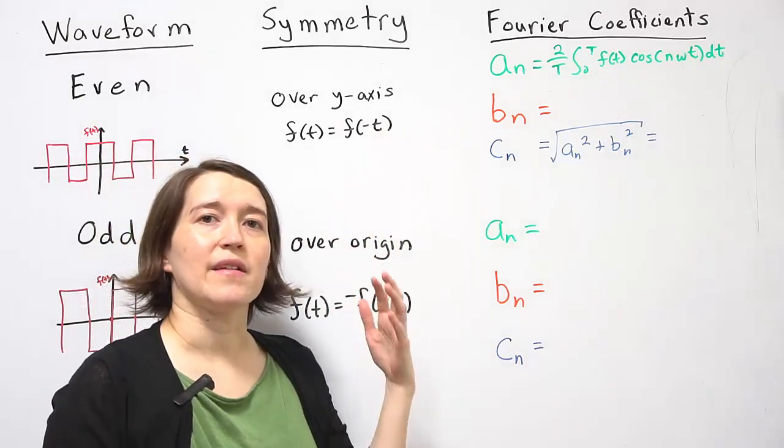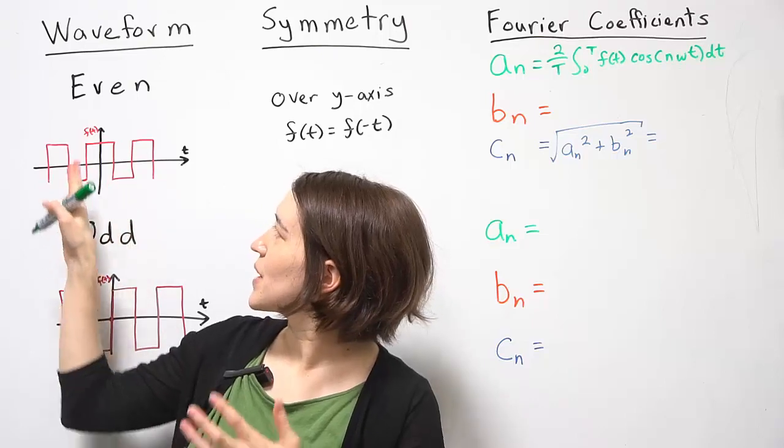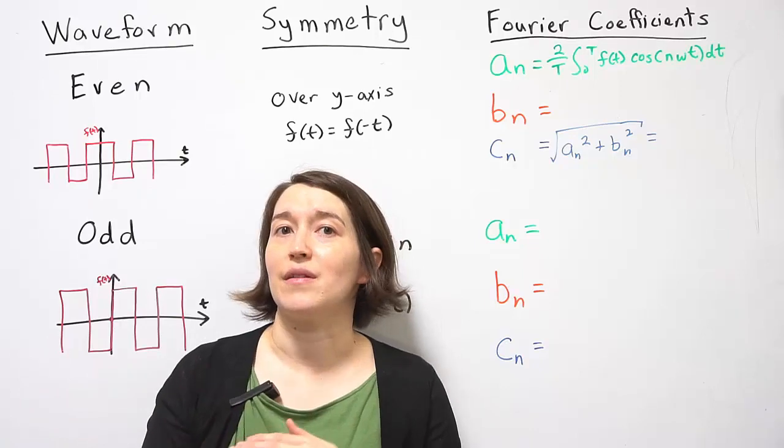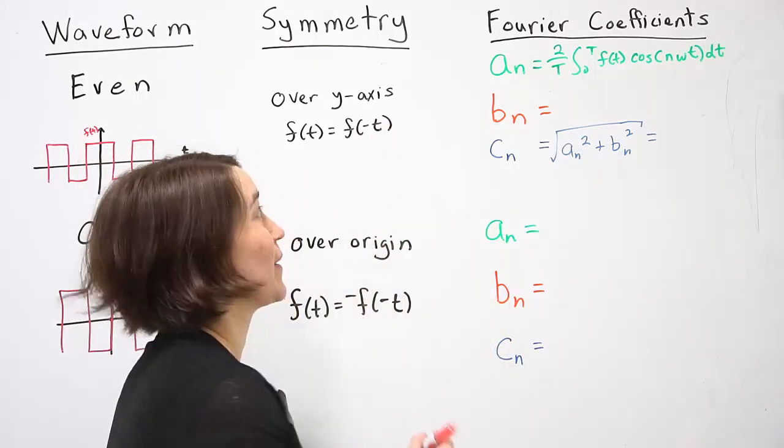Bn is based on the sine function. But because this is completely symmetric, we actually don't have any sine components that will come out in the Fourier expansion.